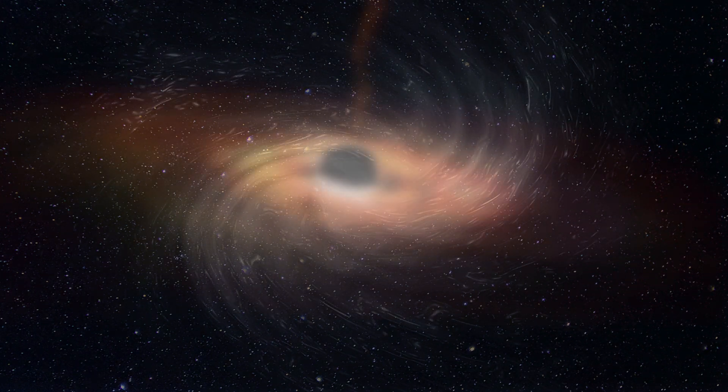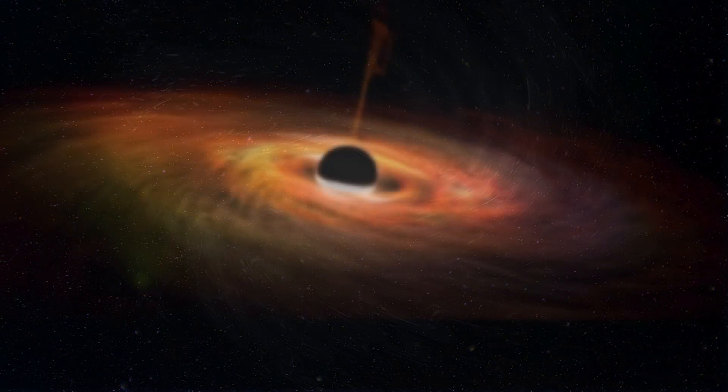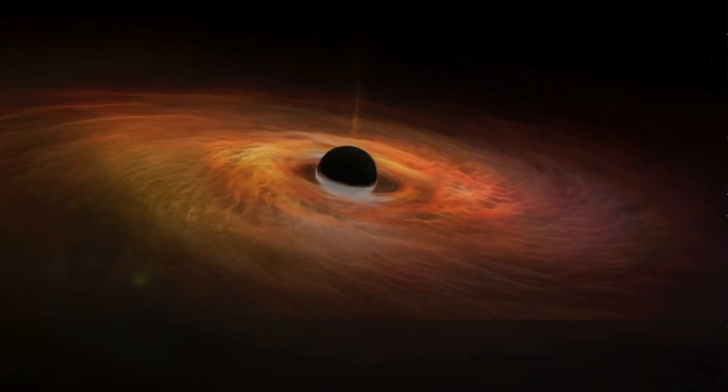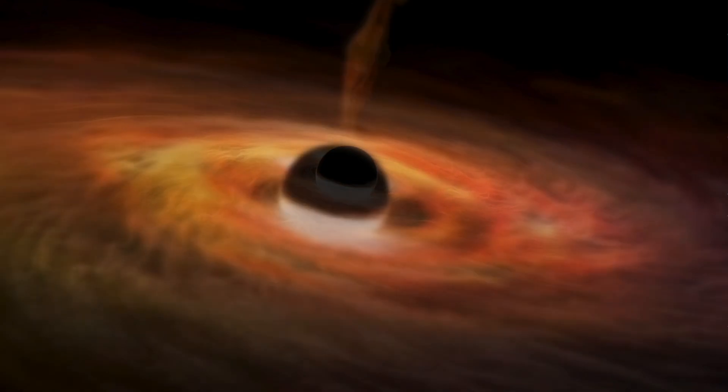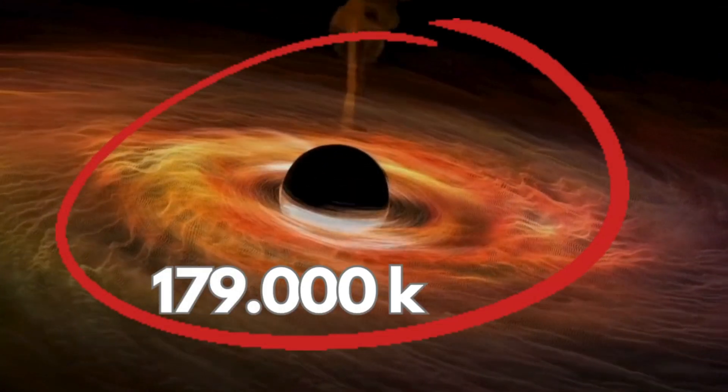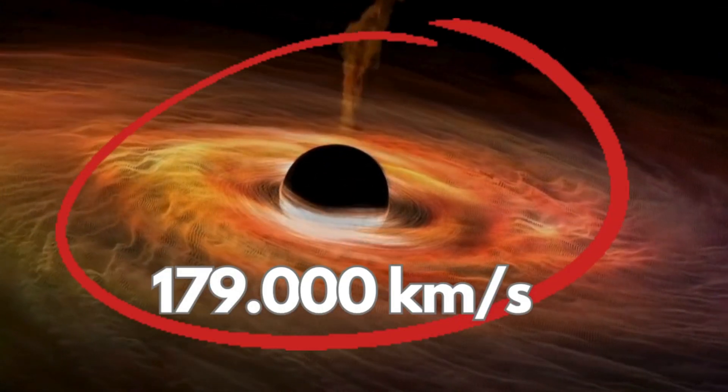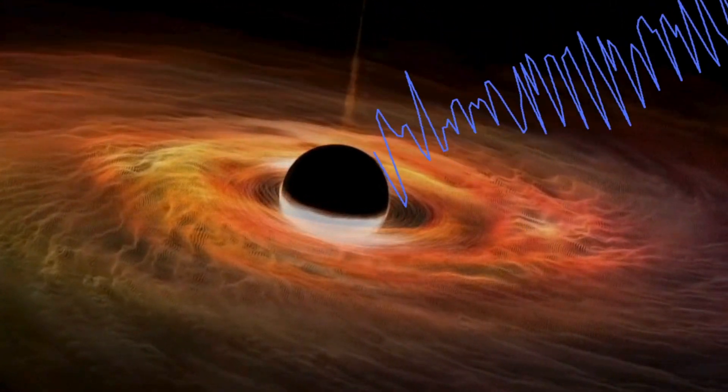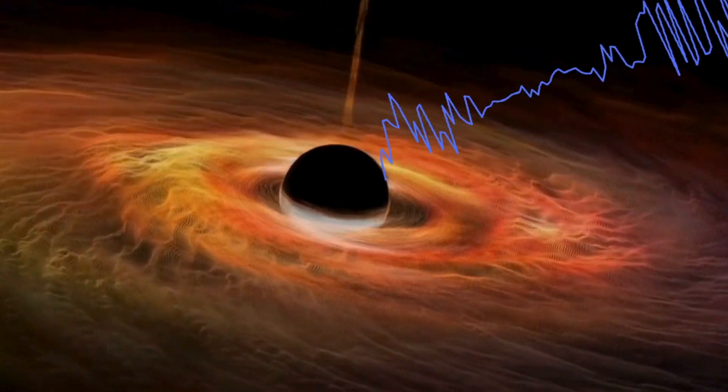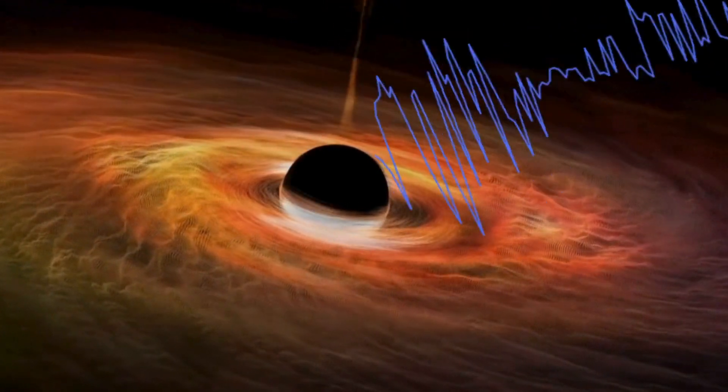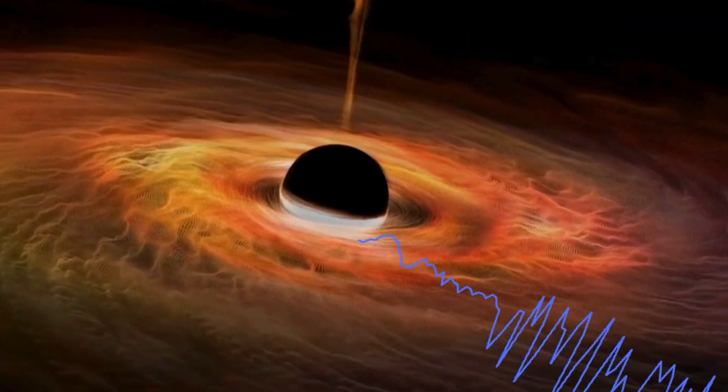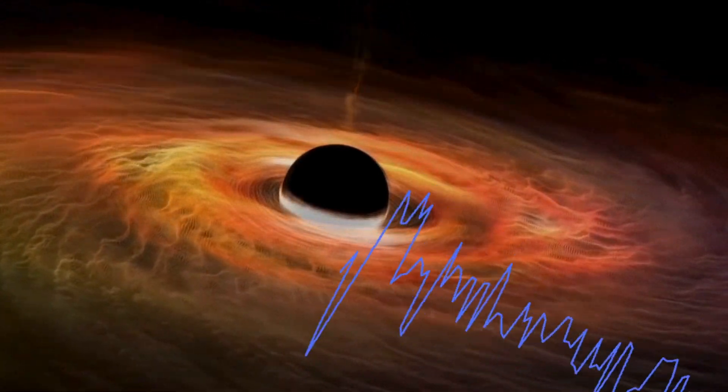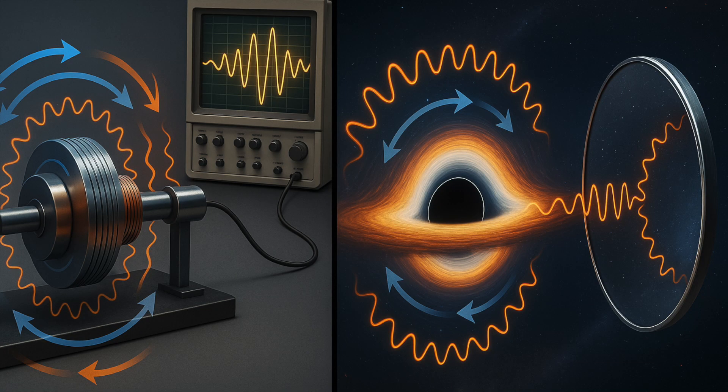To put it into perspective, at the center of our galaxy, the rotational drag inside the ergosphere of its supermassive black hole is estimated to spin space itself at around 179,000 kilometers per second. If the wave we send in is rotating in the same direction as the black hole spin, the black hole won't absorb it. Instead, it uses some of its own rotational energy to amplify the wave and hurl it back. Scientists call this process superradiance.